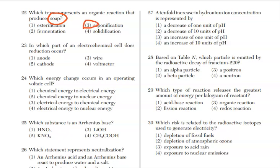For 23, in which part of an electrochemical cell does reduction occur? It's an ox red cat. It's the easiest way to know it. So red for reduction, cat for cathode.